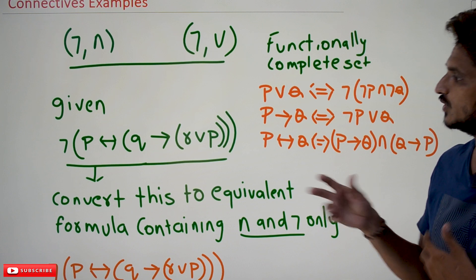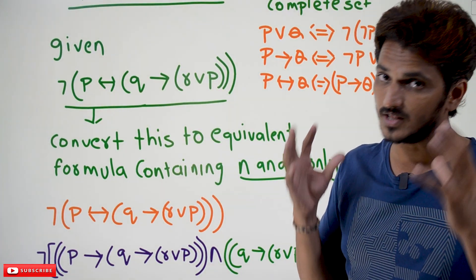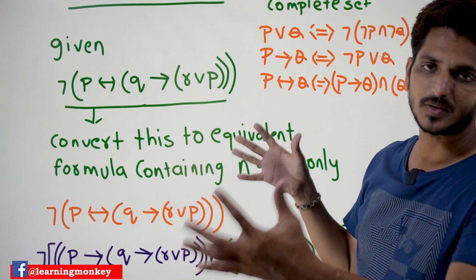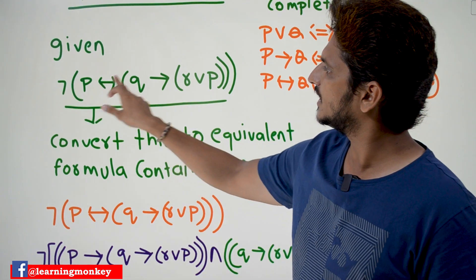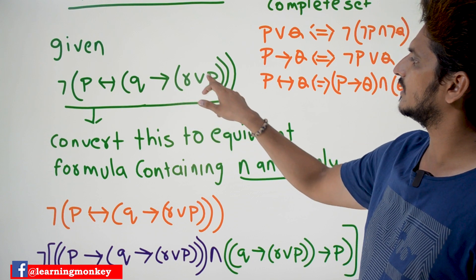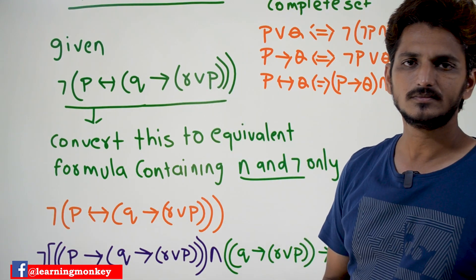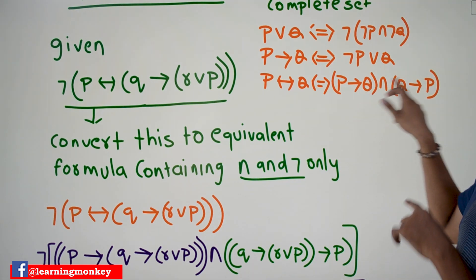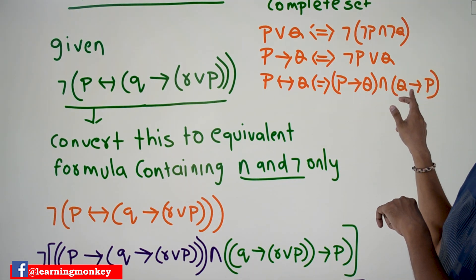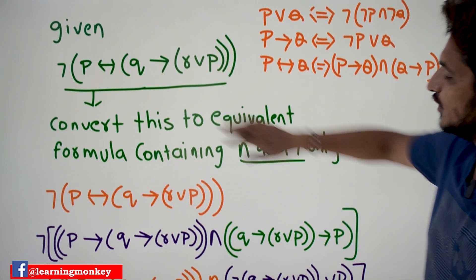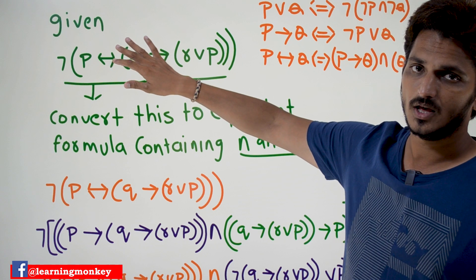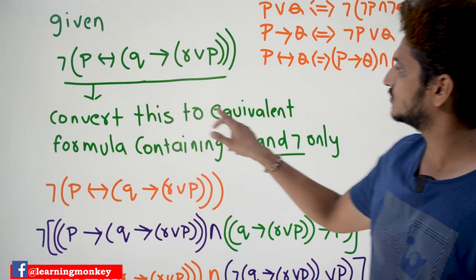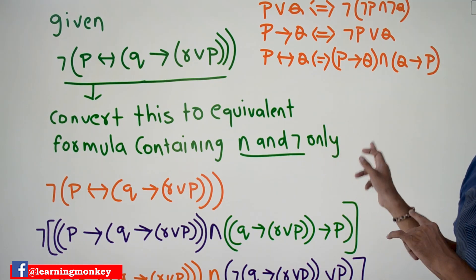Let us take an example and understand how we need to convert. This is a bit complex — you need to be very focused about the symbols. We have: negation of the entire proposition — p double implies (q implies r) disjunction p. We need to convert this proposition to an equivalent proposition containing only the symbols negation and conjunction.